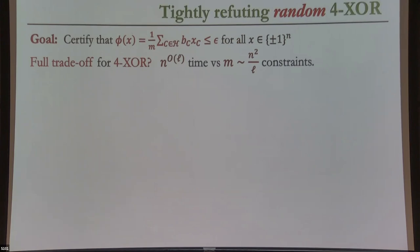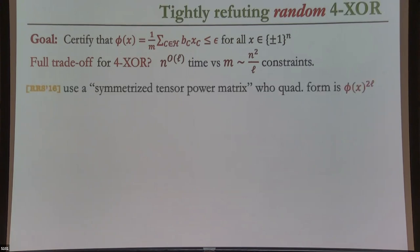That was the L = O(1) regime. Now I want to tell you how to go beyond. How do we get the full trade-off? If I have N^2/L constraints, I'd like an O(L)-time algorithm. This was first proven by Raghavendra, Rao, and Schramm in 2016–2017. They use a slightly complicated matrix — I call it the symmetrized tensor power matrix — which roughly corresponds to some high power of phi(X). The analysis was fairly complicated, using a space power method with dependent random matrix entries.